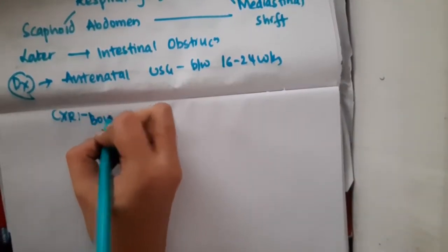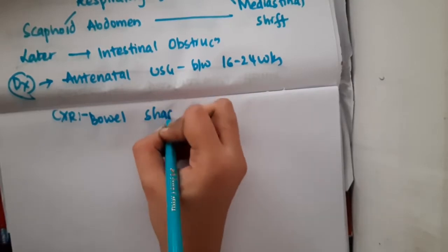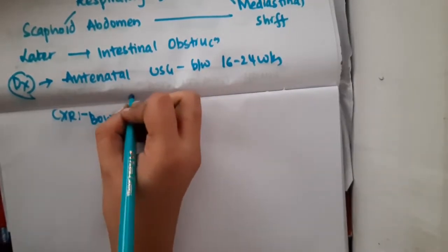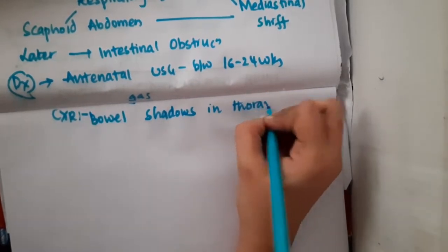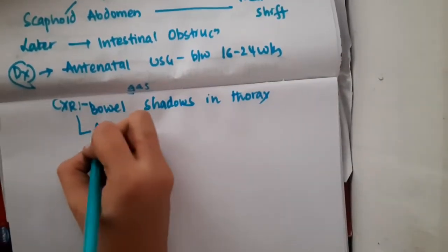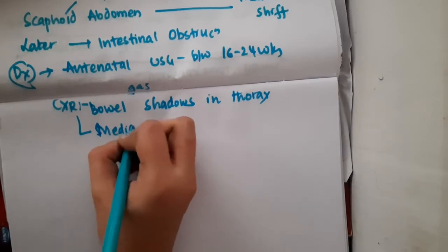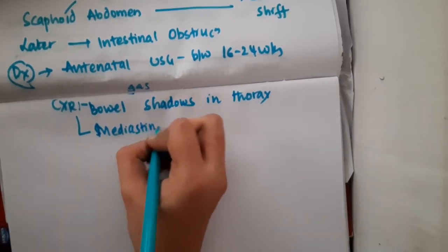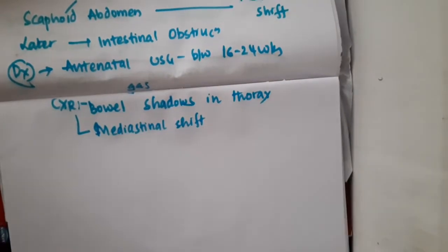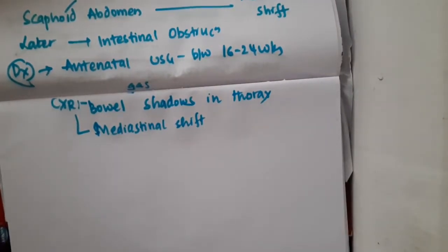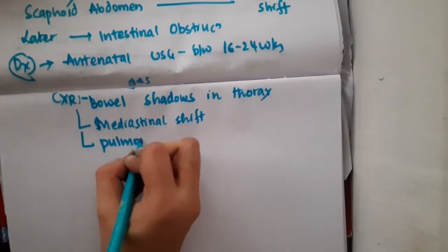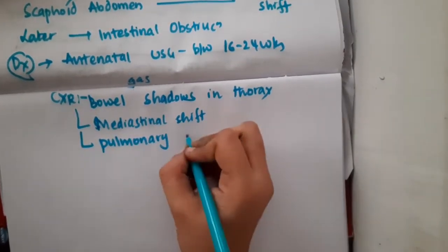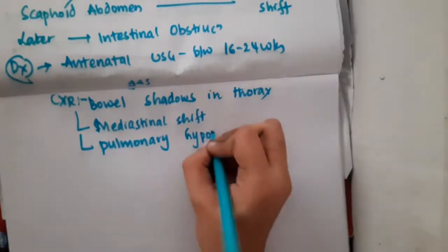On chest X-ray, you will see bowel gas shadows present in the thorax instead of the abdomen. They cause mediastinal shift, the lung shifts to the opposite side, and the lung on the side of the defect shows pulmonary hypoplasia.